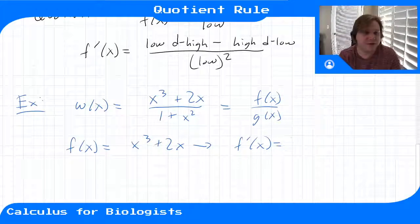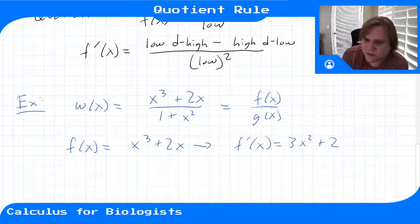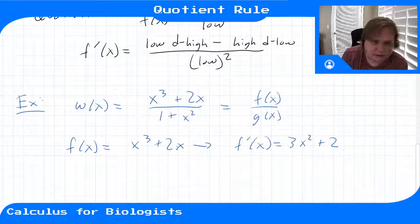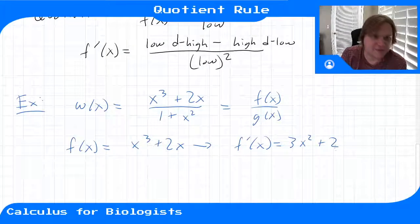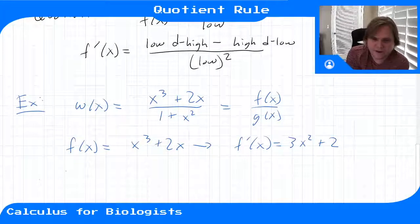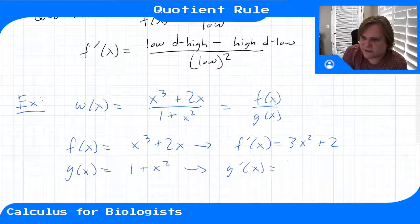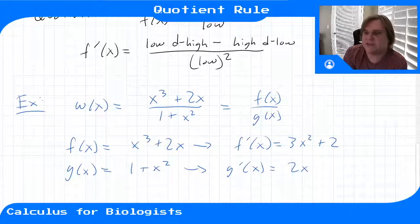For f of x equals x cubed plus two x, the derivative f prime of x is three x squared plus two. Bring down the power and reduce the power by one. The two x term is linear, so it just gives two — you can think of it as the power rule: bring down the one and x to the zero is one, giving two. Our other function g of x is one plus x squared, so g prime of x equals two x.